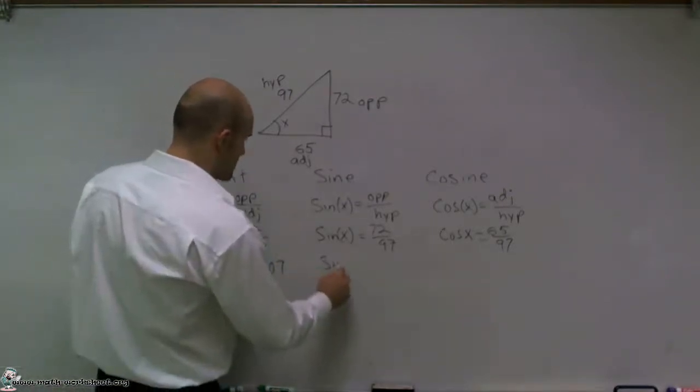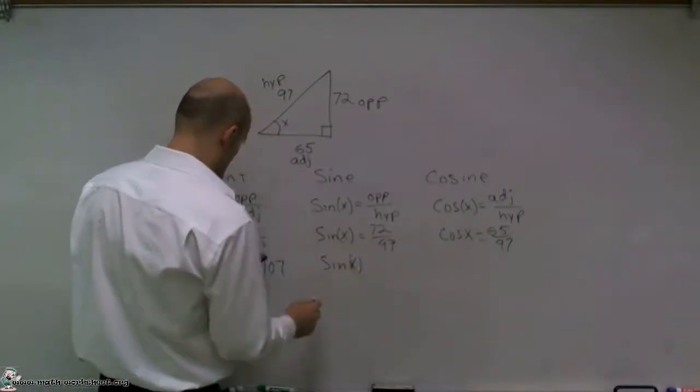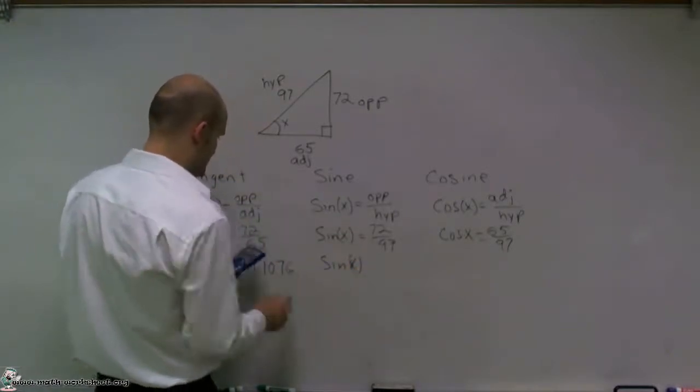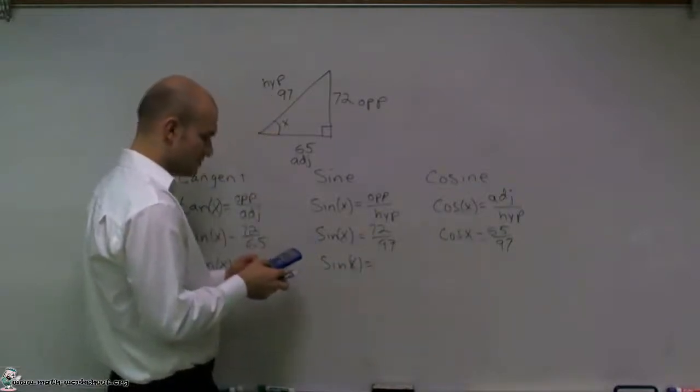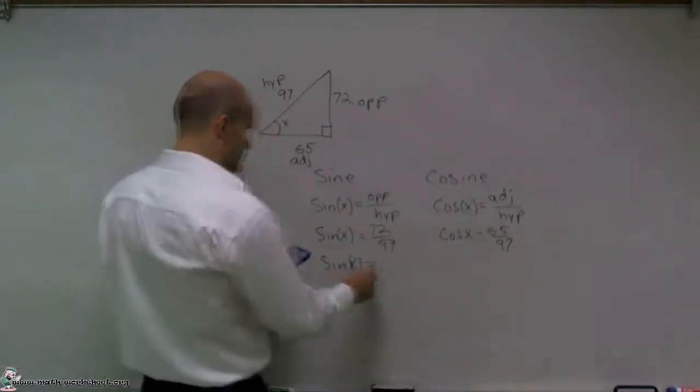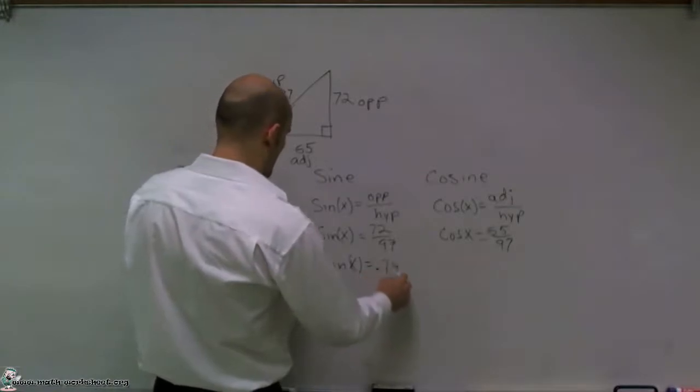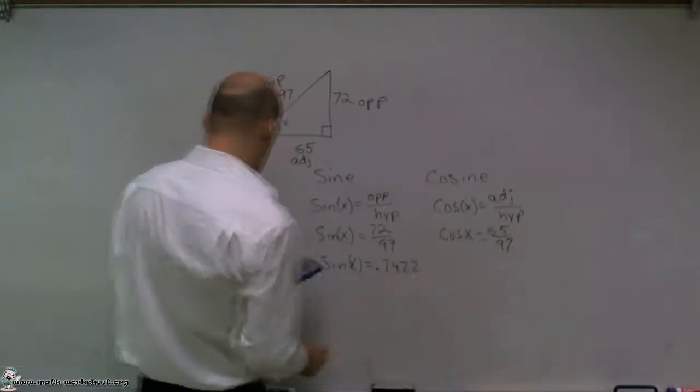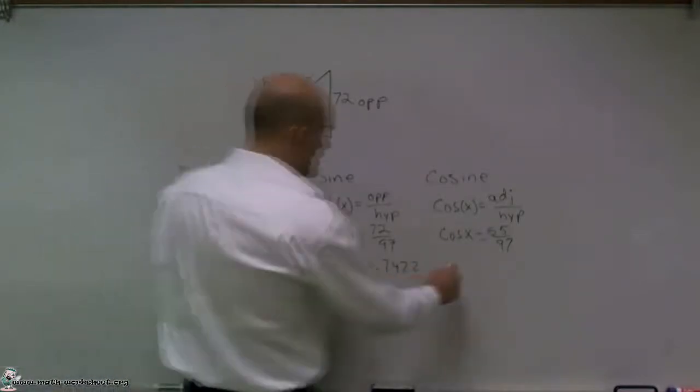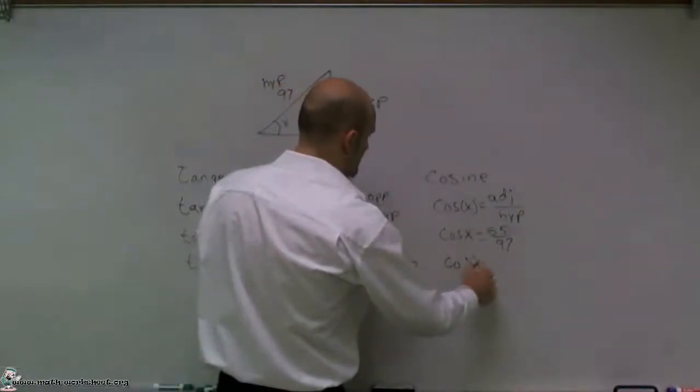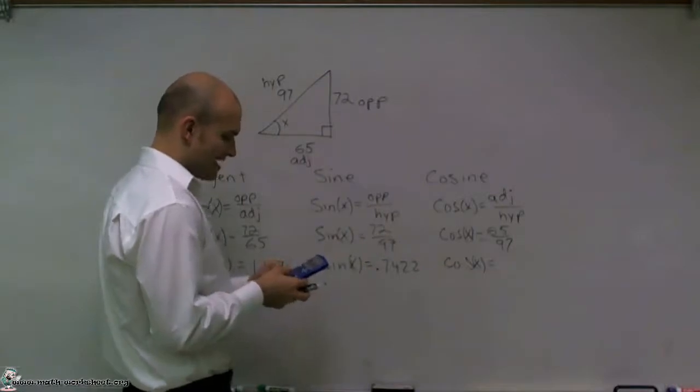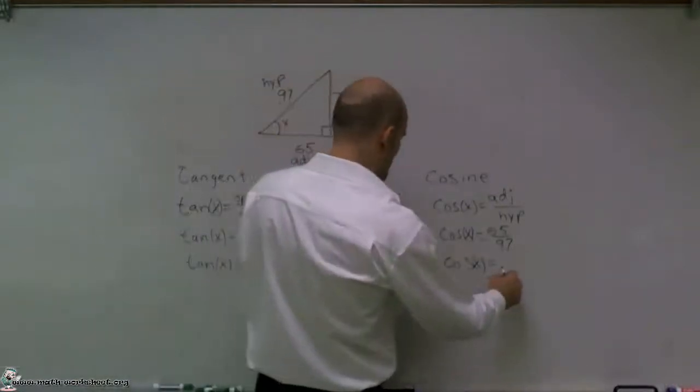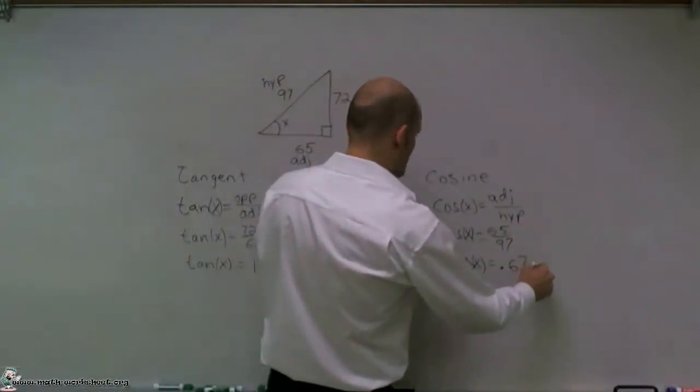The sine of x equals 72 divided by 97, which is 0.7422. And the cosine of x equals 65 divided by 97, which is 0.6701.